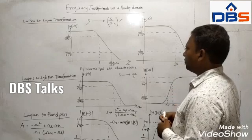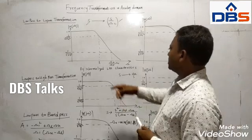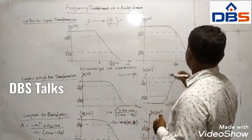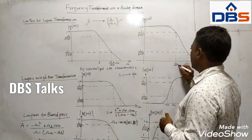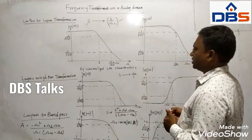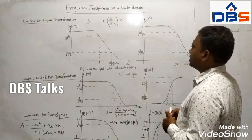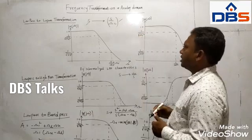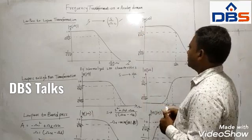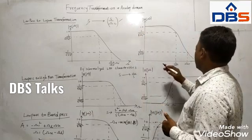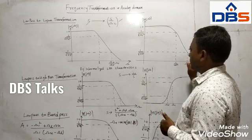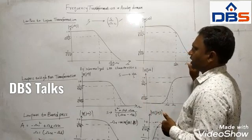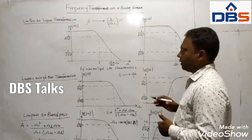Previously the cutoff frequency was at one value; now it is modified. So the rule is: whenever s is there, substitute s by s divided by omega_c. Then you will get the transformed frequency characteristics of the low-pass filter.